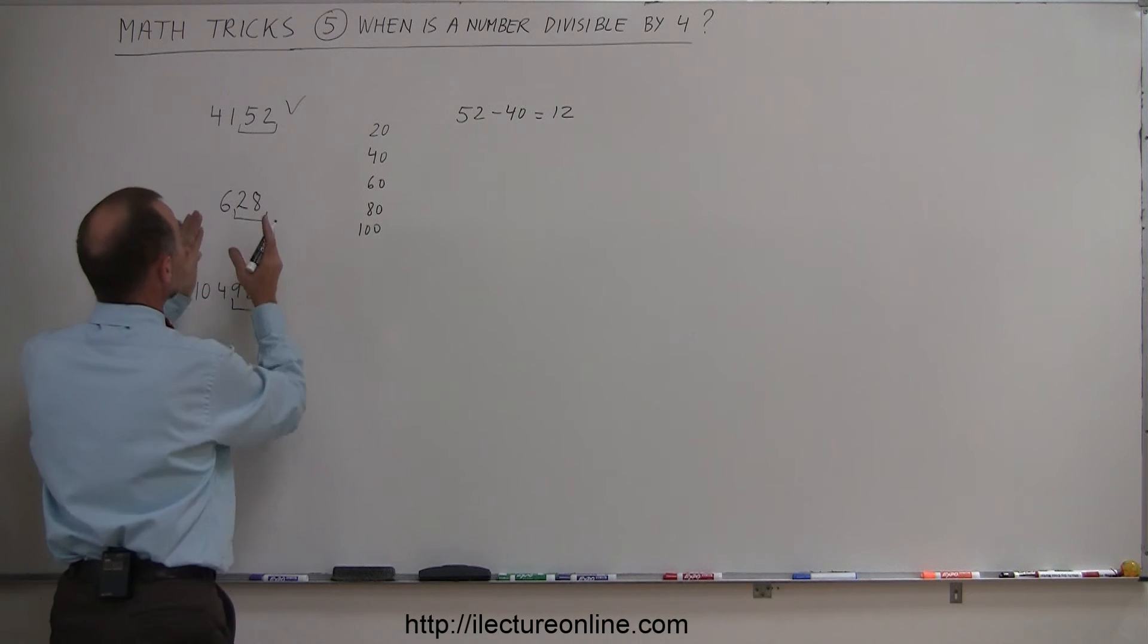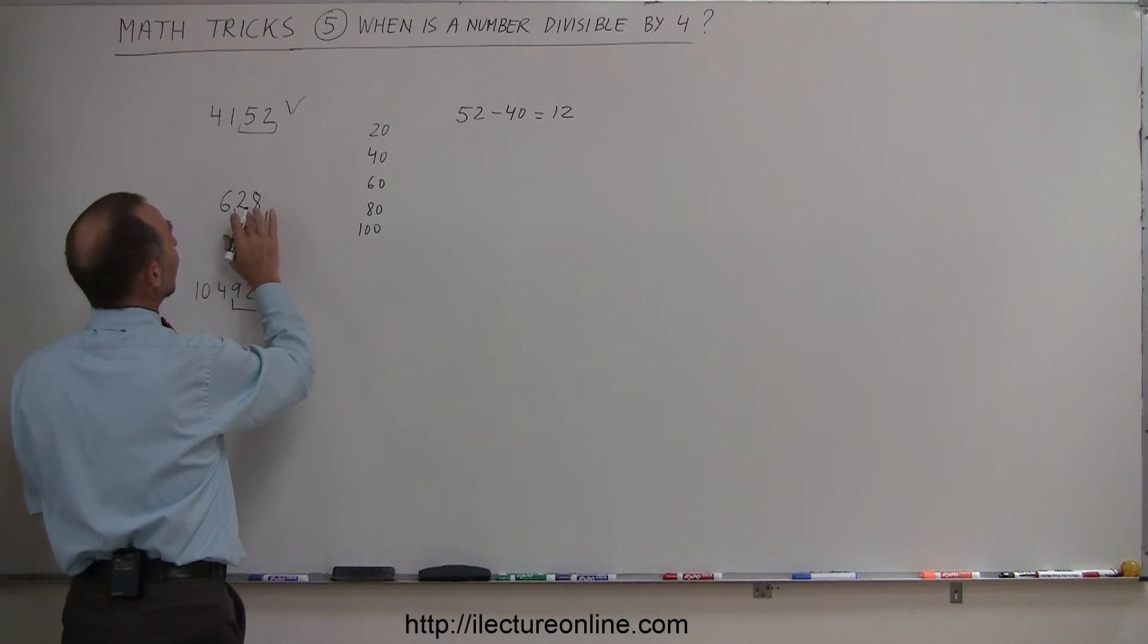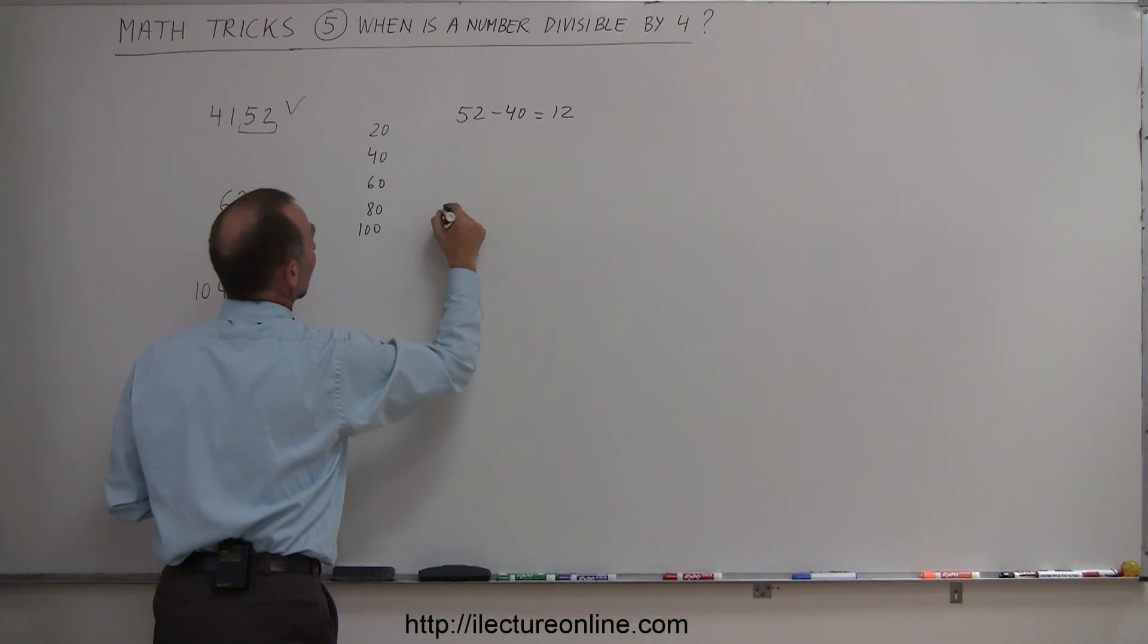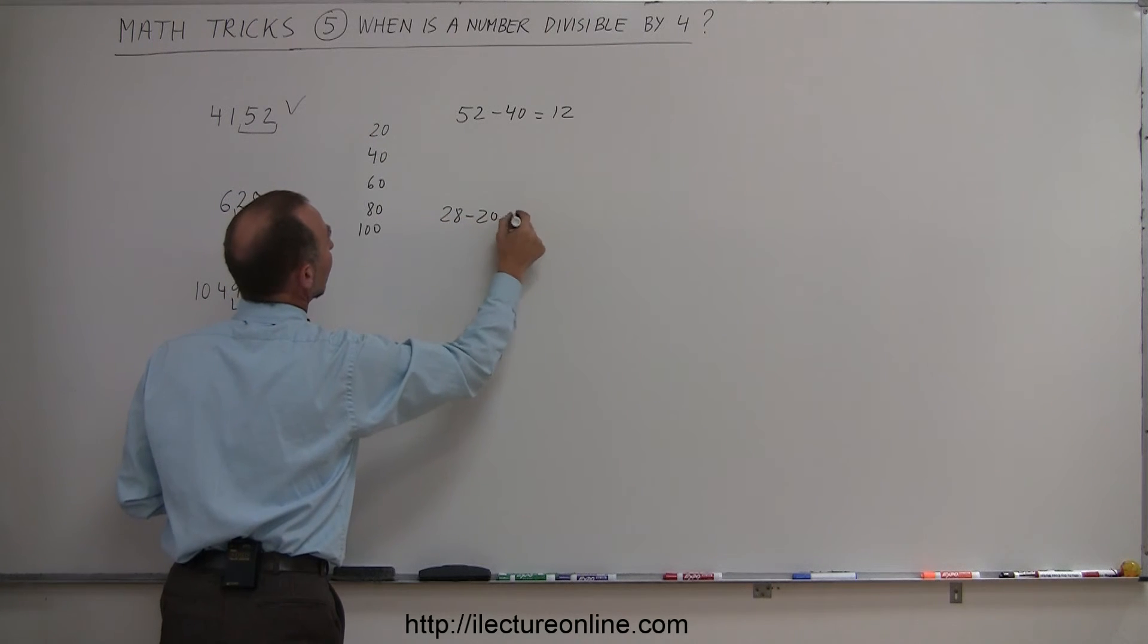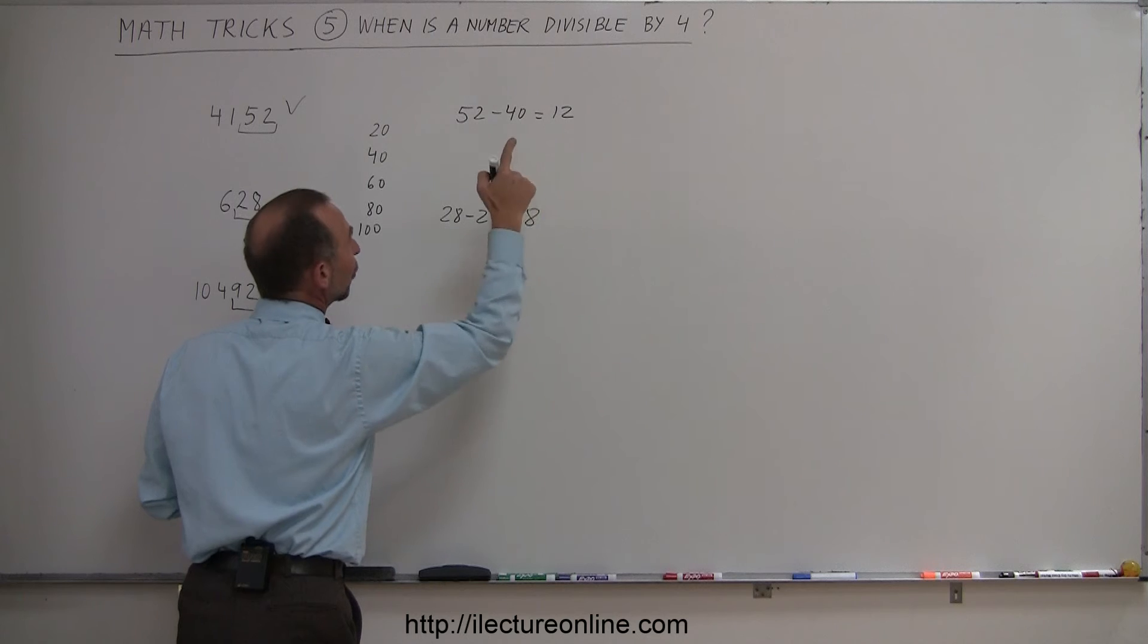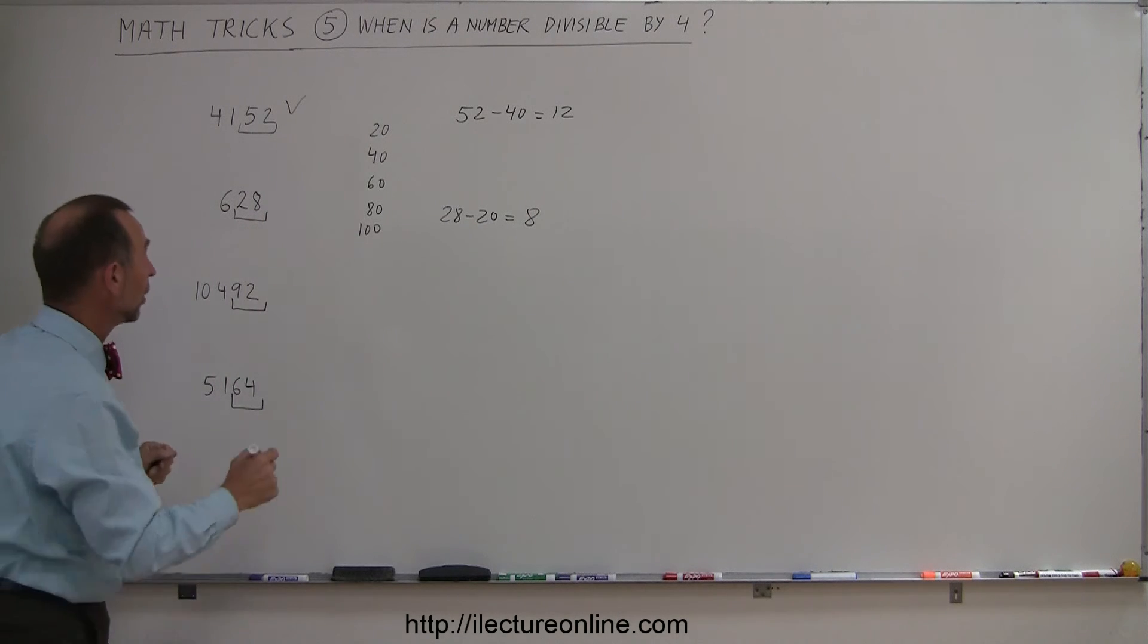Same here with 628, only worry about the last two digits. Then take 28, subtract one of these numbers from it, so 28 minus 20 gives you 8, and 8 is divisible by 4, so yes this number is divisible by 4.